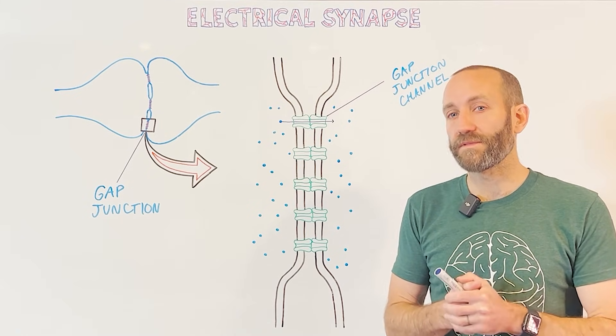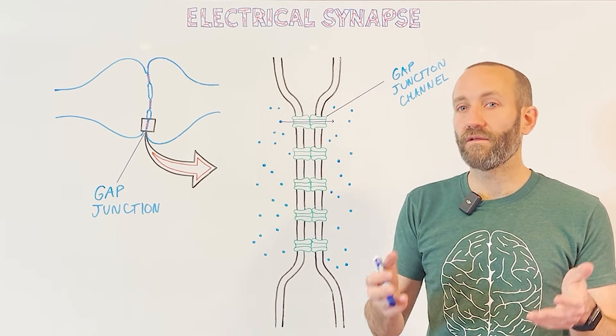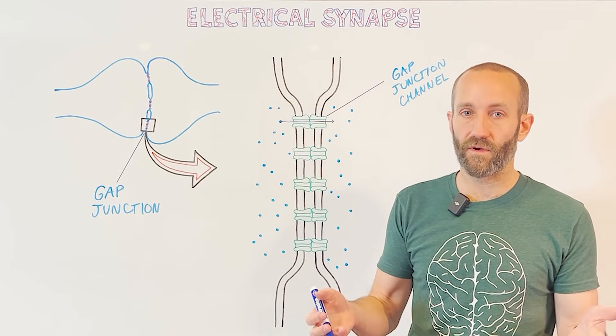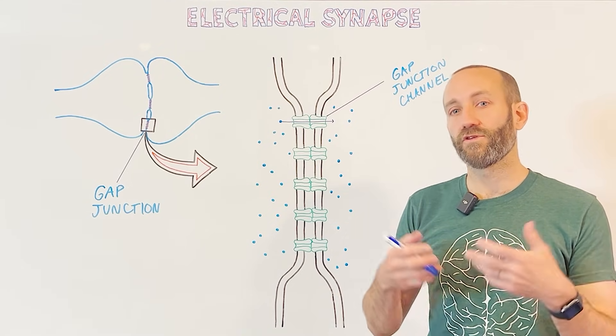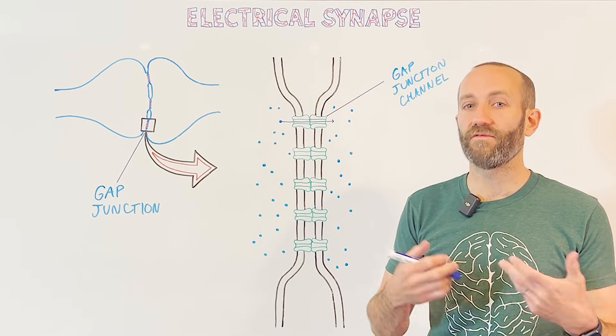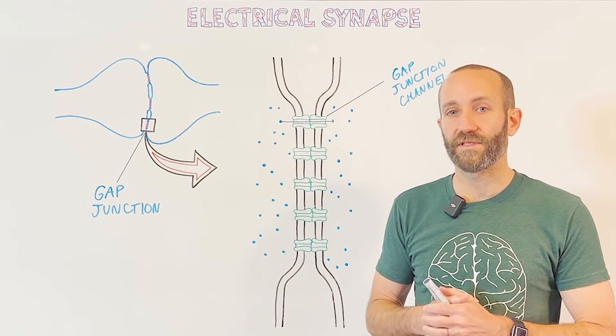One major benefit of chemical synapses, however, is that they can amplify signals substantially. A relatively weak electrical current in the presynaptic neuron can cause the release of thousands of neurotransmitter molecules at a chemical synapse, and those neurotransmitter molecules can cause a substantial effect on a postsynaptic neuron. So this is likely one reason for the prevalence of chemical synapses in the human nervous system, although both types of synapses have their place.